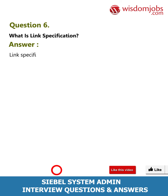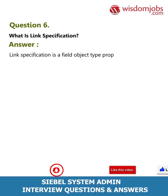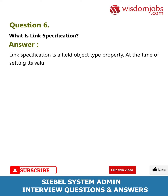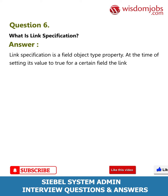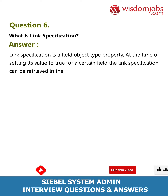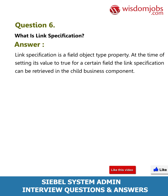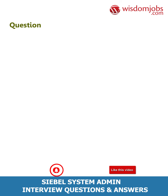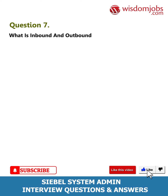Question 6: What is link specification? Answer: Link specification is a field object type property. At the time of setting its value to true for a certain field, the link specification can be retrieved in the child business component.